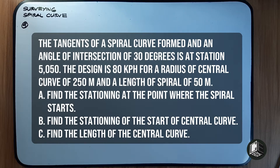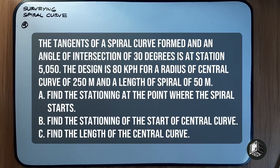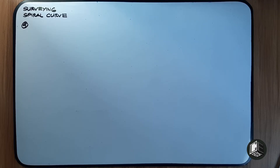Problem number 44. A spiral curve — the tangents of a spiral curve form an angle of intersection of 30 degrees at station 5050. Design speed is 80 kilometers per hour, radius of 250 meters, and a length of spiral of 50 meters. Determine: the station at the point where the spiral starts, the stationing of the start of the central curve, and the length of the central curve.